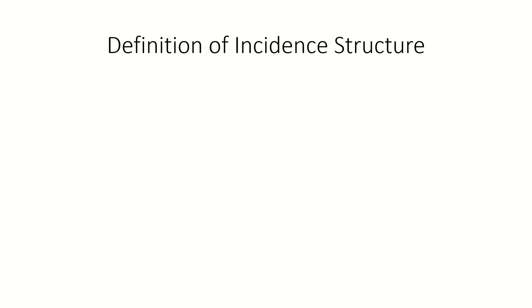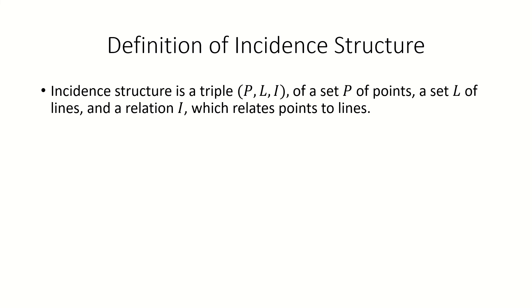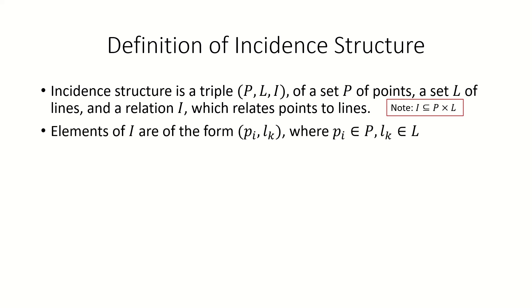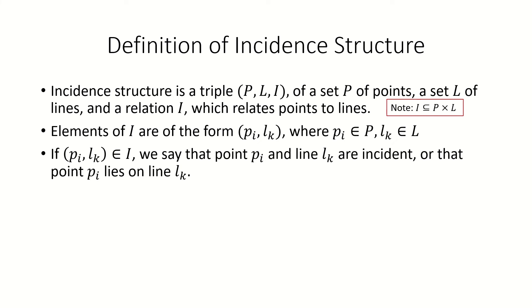More formally, an incidence structure is a triple, where P is a non-empty set of objects called points, L is a possibly empty set of objects called lines, and I is the incidence relation between points and lines. We can say that I is a subset of the Cartesian product of P with L, and the elements of I are ordered pairs (P_i, L_k), where P_i is a point and L_k is a line. If a point and a line appear together in an element of I, we say they're incident with each other.